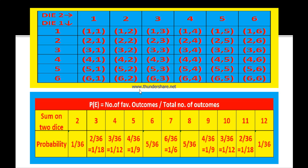Similarly, to get sum 8 there are 5 favorable outcomes, giving 5 by 36. To get sum 9, there are 4 favorable outcomes: 4 by 36, which equals 1 by 9. To get sum 10, there are 3 favorable outcomes: 3 by 36, simplified to 1 by 12. To get sum 11, there are 2 favorable outcomes: 2 by 36, simplified to 1 by 18. To get sum 12, there is only 1 ordered pair, so the probability is 1 by 36.